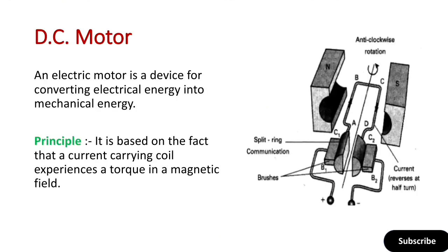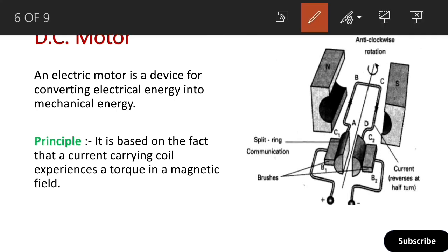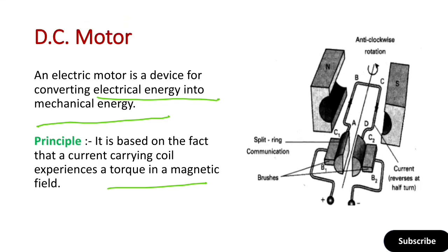Next, what is a DC motor? A DC motor is a device for converting electrical energy into mechanical energy. When we need to convert electrical energy to mechanical energy, we use a DC motor. Its principle is based on the fact that a current-carrying coil experiences a torque when placed in a magnetic field.